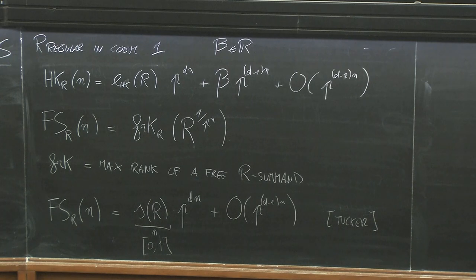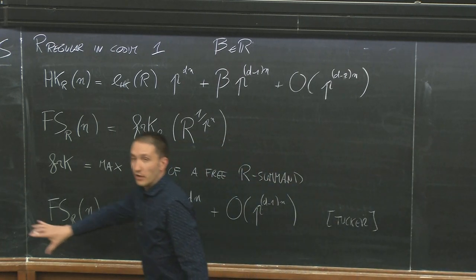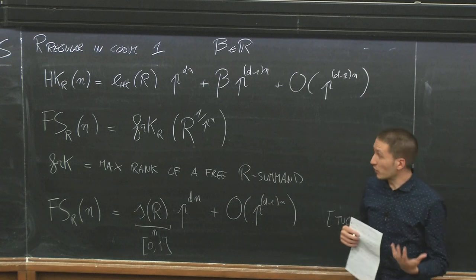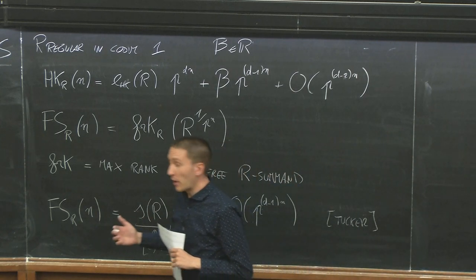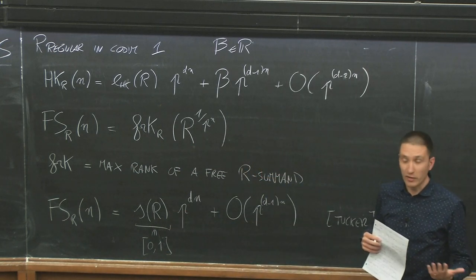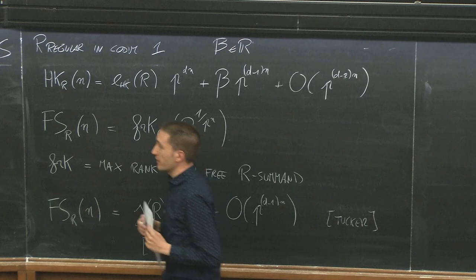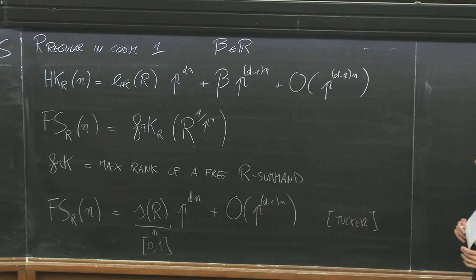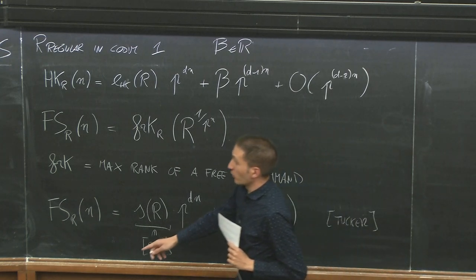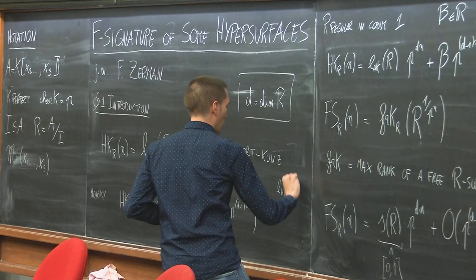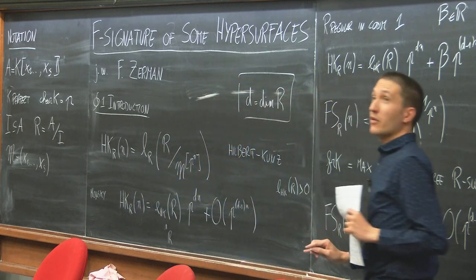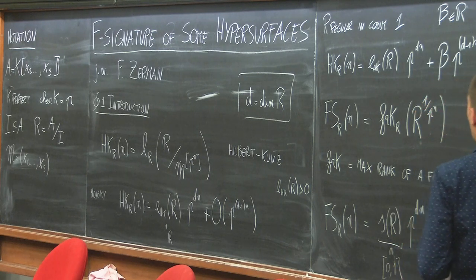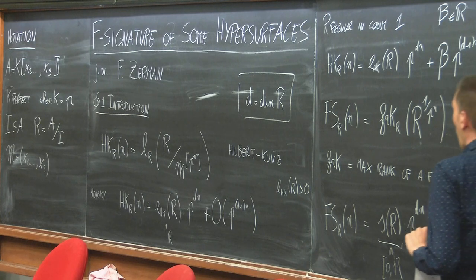S(R) is a real number that, differently from the Hilbert-Kunz multiplicity, lies in the interval [0, 1]. Much effort has been devoted to studying this invariant. Under mild assumptions, both the Hilbert-Kunz multiplicity and the F-signature equal one if and only if the ring is regular. In general, higher Hilbert-Kunz multiplicity means more complicated singularities, and F-signature closer to 0 means more complicated singularities. The F-signature can be 0, and by work of Aberbach and Leuschke, it is 0 precisely when the ring is not strongly F-regular.